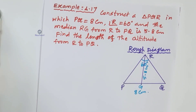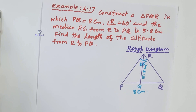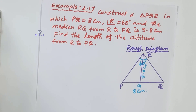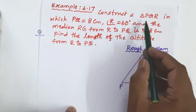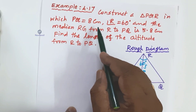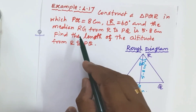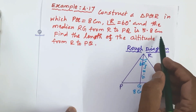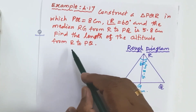Dear students, I am Karnan, your math teacher. In this video you will learn 10th Samacheer math, chapter number 4 Geometry. The concept is construction of a triangle where the base, vertical angle, and median from vertex to the base are given. We will construct triangle PQR in which PQ equals 8 centimeters, angle R equals 60 degrees, and the median RG from R to PQ is 5.8 centimeters.